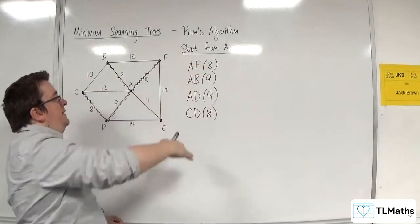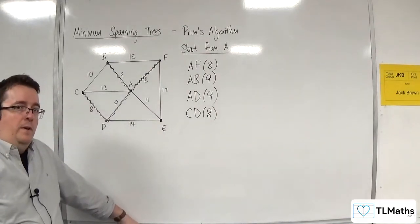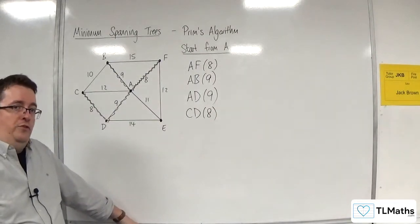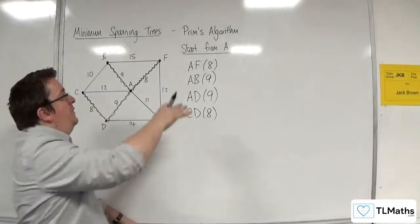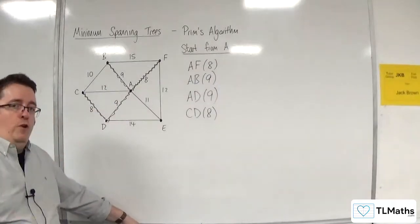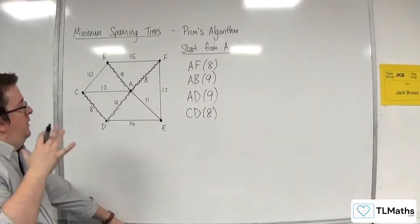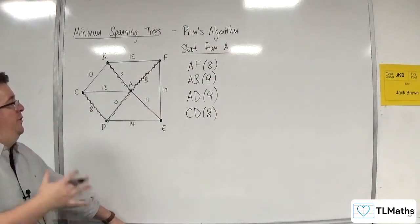So writing down the edges as you pick them is incredibly important. Do not change the order. The order that you are picking them is crucial. That is essential. That is showing that you are using the algorithm.